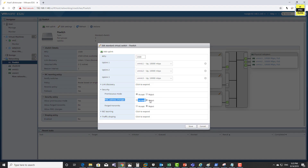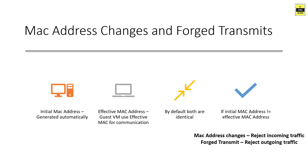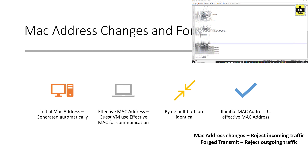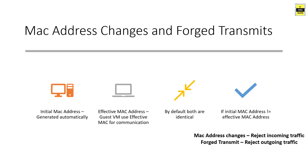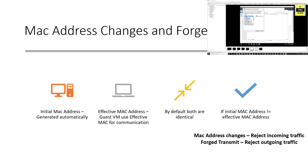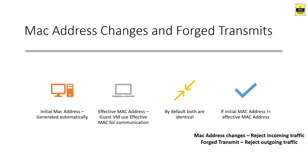The next security policies to discuss are MAC address changes and forged transmit. All virtual machines have two MAC addresses: an initial MAC address and an effective MAC address. By default, these two are the same. The initial MAC address is generated automatically and is found in the configuration file, the .vmx file. The effective MAC address is the MAC address configured by the guest operating system during communication with other systems.